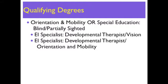If you have a bachelor's degree or higher in orientation and mobility, or a special education degree for blind and partially sighted, you may apply for an EI specialist developmental therapist vision, or EI specialist developmental therapist orientation and mobility credential. Based on your qualifications and experience, you may provide DT vision services related to visual functioning as well as developmental therapy services.